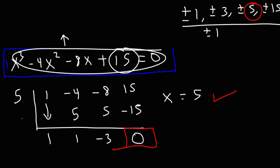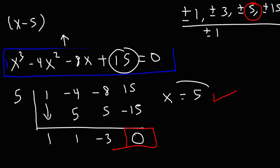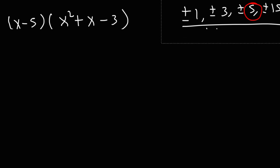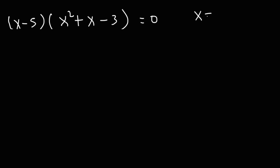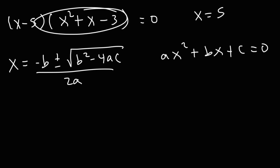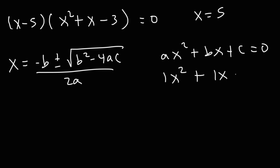To factor the original expression, it's going to be x minus 5 times what we see from the synthetic division: x squared plus x minus 3. To get the other zeros, we need to use the quadratic formula: x equals negative b plus or minus the square root of b squared minus 4ac, divided by 2a. For x squared plus x minus 3, a is 1, b is 1, and c is negative 3.